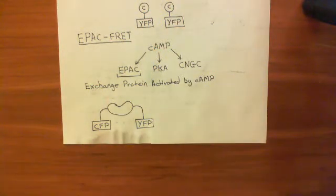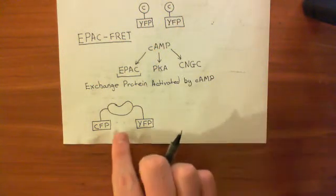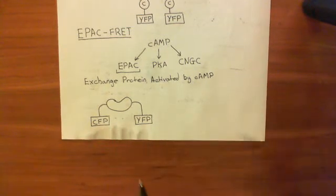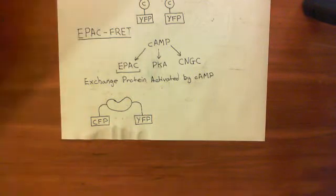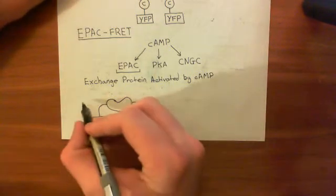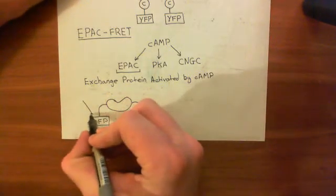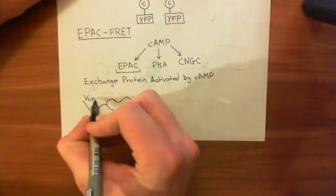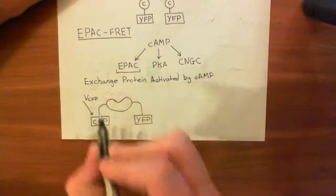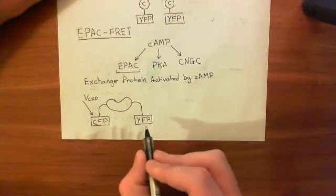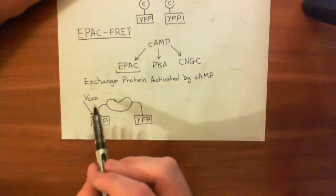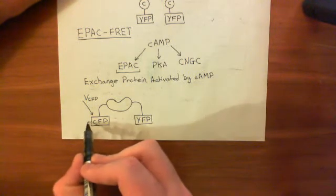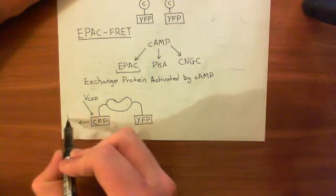So again, what you're going to get is the loss of a FRET signal when cyclic AMP binds. It's the same principle - when you send in a frequency of UV specific to cyan fluorescent protein, this frequency will not activate the yellow fluorescent protein. So this frequency of UV activates the cyan fluorescent protein, and you get blue light coming back out again.